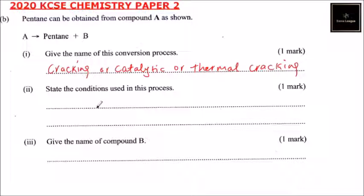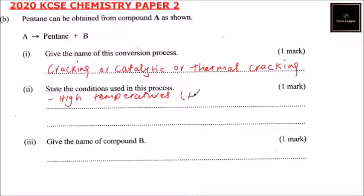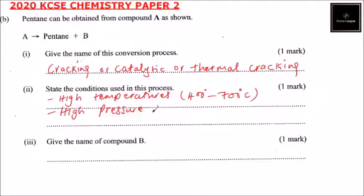Roman numeral 2: state the conditions used in this process. One condition is high temperature — from 400 to 700 degrees Celsius. Another condition is high pressure, around 70 atmospheres.